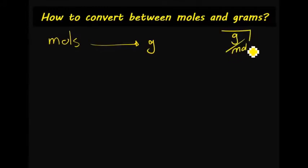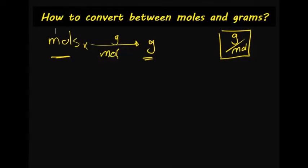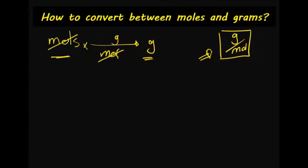The molar mass will be used as a conversion factor. So if I start with moles and I want to convert to grams, I will multiply by grams over moles — which is the conversion factor, the molar mass. Moles will cancel with moles, and I will be left with grams.